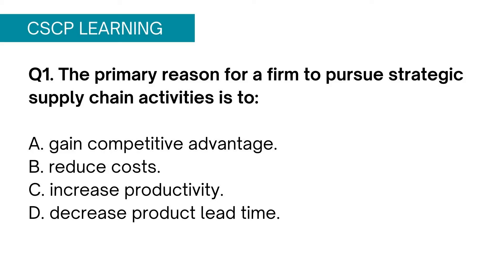Option A, gain competitive advantage. Supply chain is all about gaining competitive edge. Therefore this option seems correct. However, let's evaluate the other 3 options. Option B, reducing cost — reducing cost eventually helps you gain competitive edge. Therefore it has already been covered under Option A.